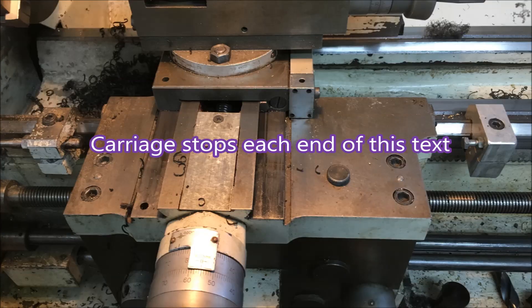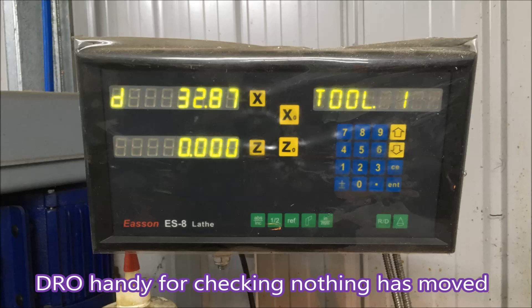There's the carriage stops you can see at either end of the carriage. And I set the DRO so that I had a zero at one end, so if anything moved I could tell.